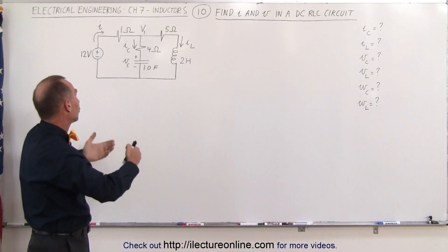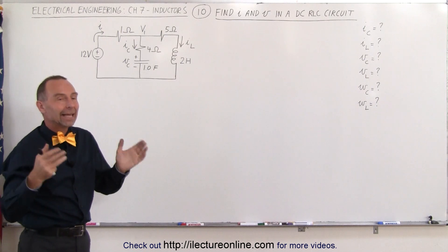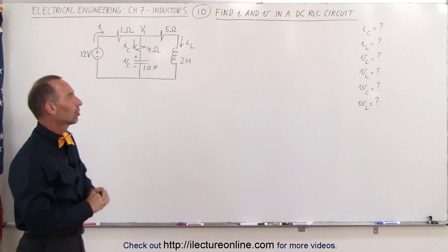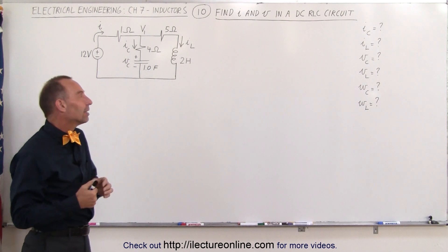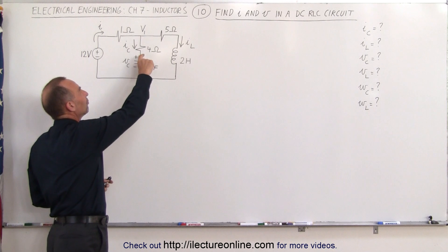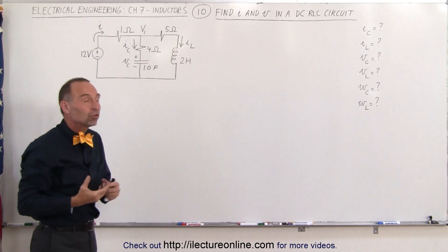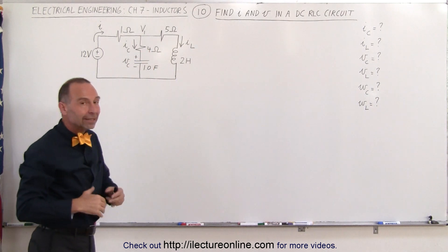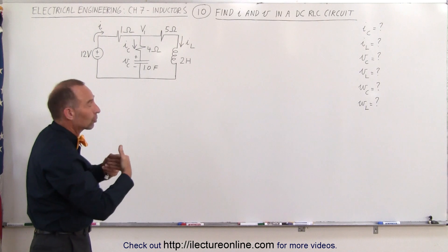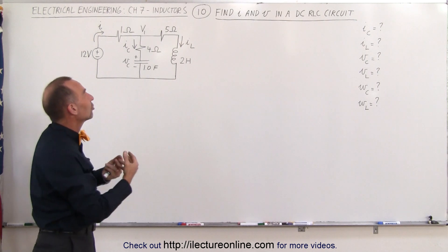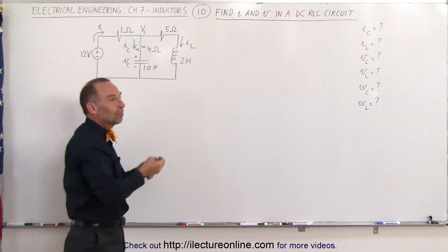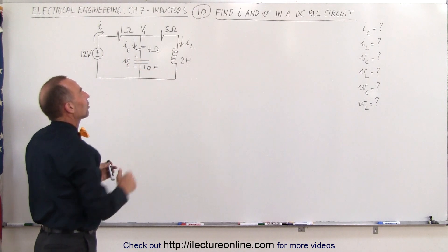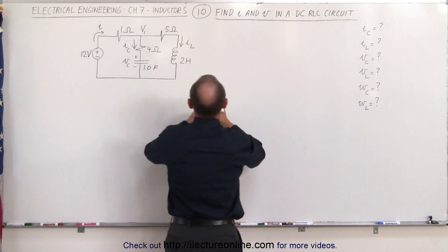In other words, we close the switch, we let the current flow for a while, and at the end, when everything is stable at steady state condition, what are those six items in the circuit? To do that, at steady state, we can imagine that no current will flow to the capacitor because the capacitor will be filled with charge, and therefore the capacitor acts like an open in the circuit. The inductor at steady state, we can imagine that the current is steady — there's no change in the current. If there's no change in the current, the inductor acts simply like a short. It doesn't oppose anything, and so we can simply replace the inductor by a short.